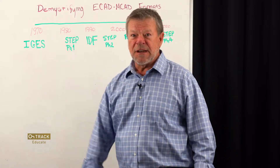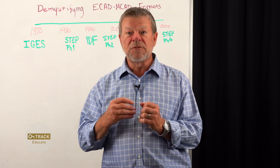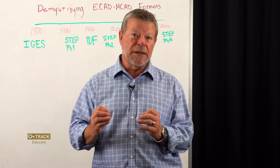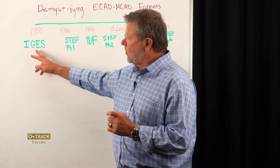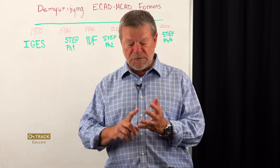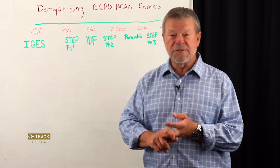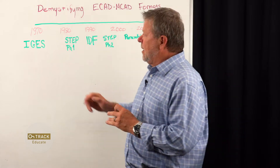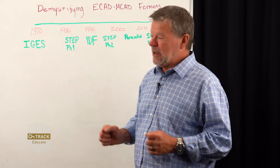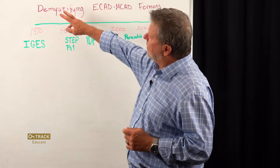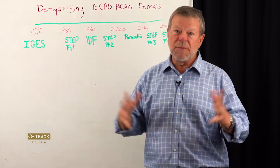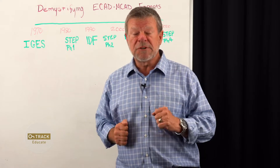In 1970, several companies were now using CADM and the military stepped in and said, let's have a standard interchange format. That first format was called IGES, and it was very specific to mechanical parts, very specific to aircraft parts and also military. So this was not a very compatible format for other systems. In just a couple of years after IGES came out, the first electronic program came out — basically just a drawing program that allowed you to do schematics.